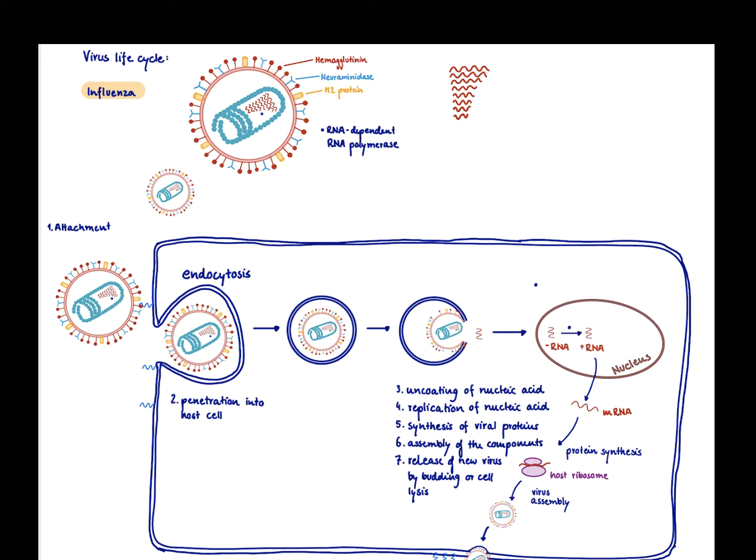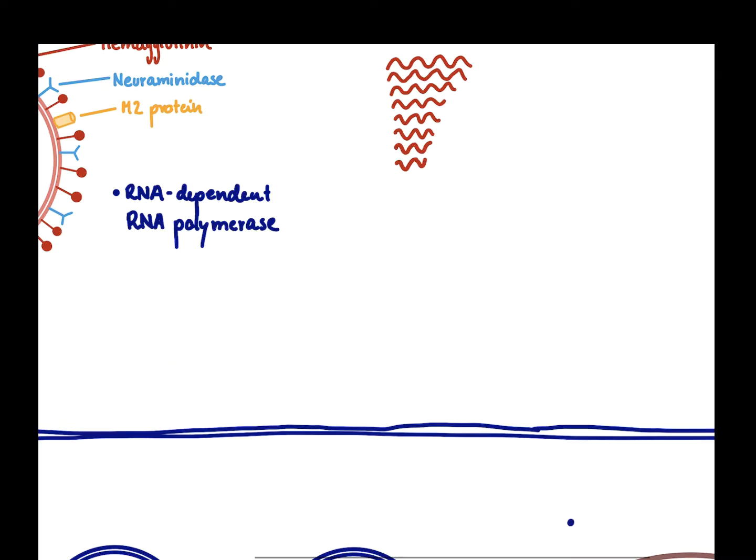In this video I want to talk about drugs that we use to treat influenza. In order to understand them, we first need to look at the influenza life cycle. So influenza is a negative strand single-stranded RNA virus and its genome is segmented.